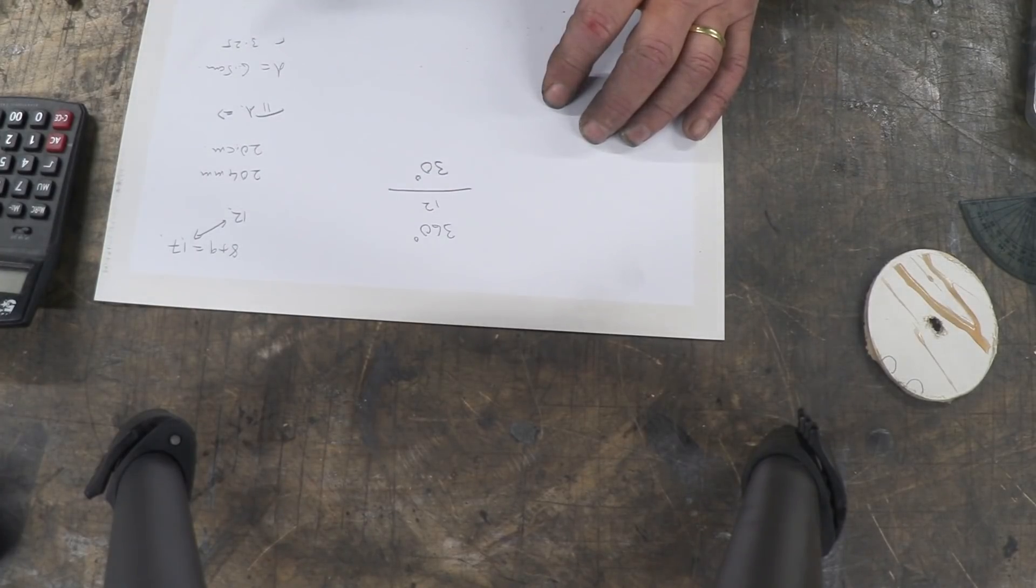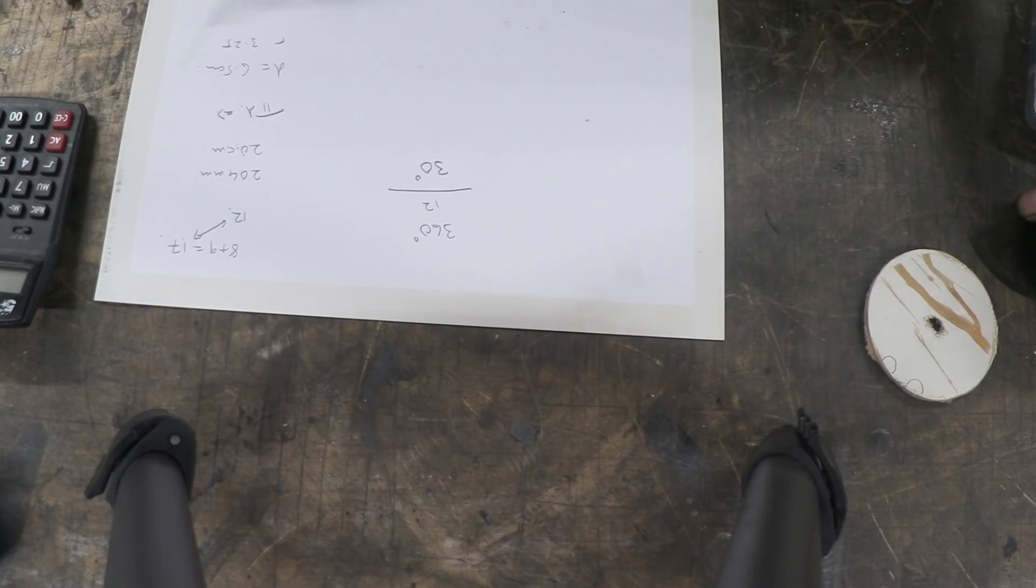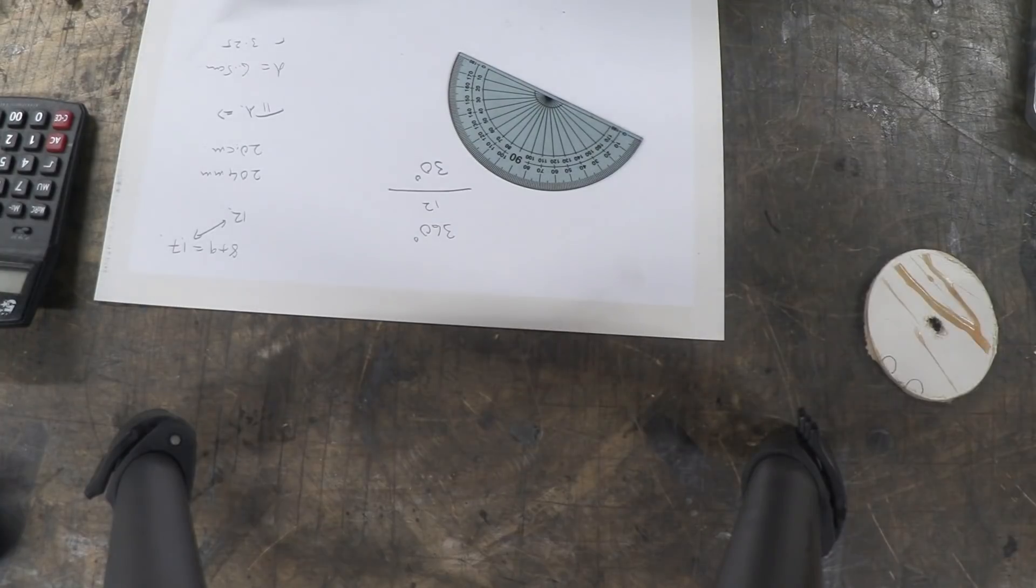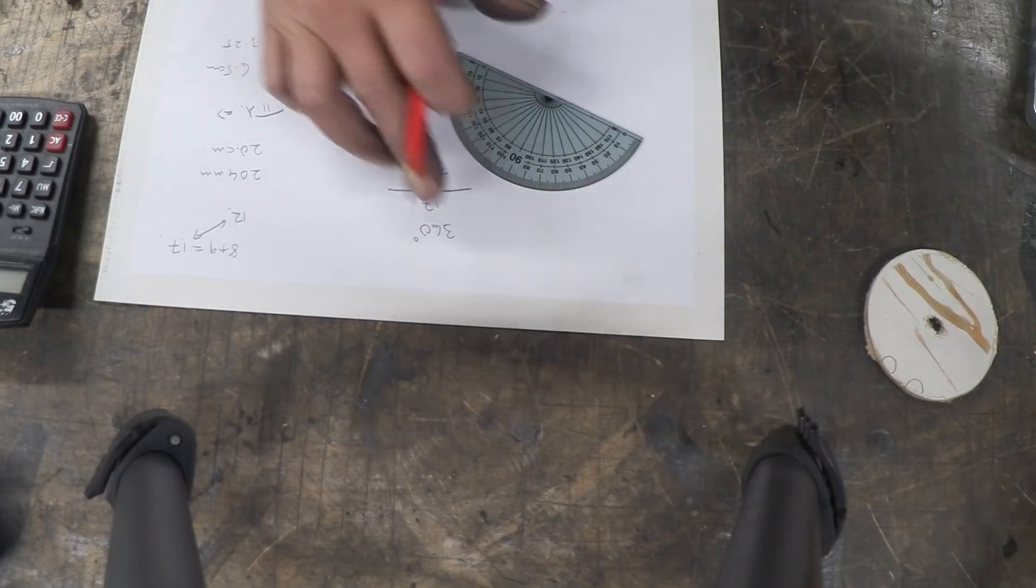So I draw my circle, take a protractor and mark every 30 degrees around that circle. And that's exactly what I've done here on this bit of MDF.